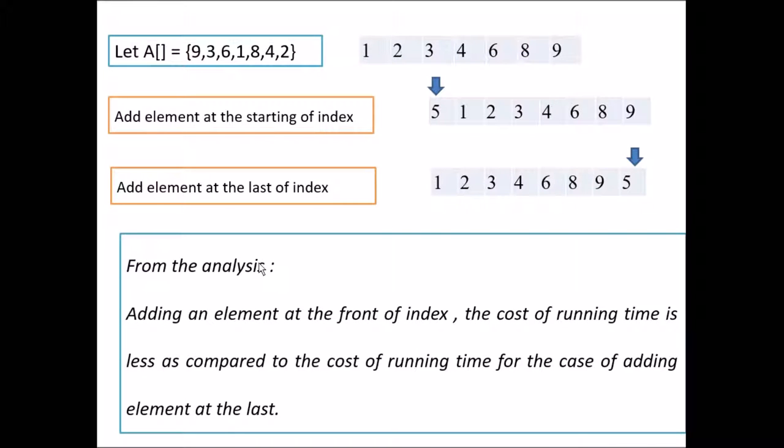Let the array be A, and which consists of 7 elements. After the array is sorted, it will look like this. That is 1 2 3 4 6 8 9. So now a new element, that is 5, is added at the beginning of the array. And consider this as one case. Now again consider another case, the element is added at the end of the array, that is last of the index.